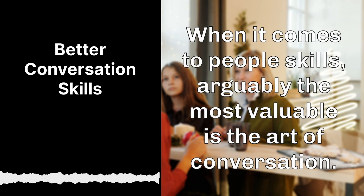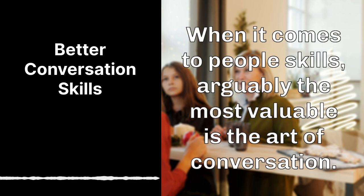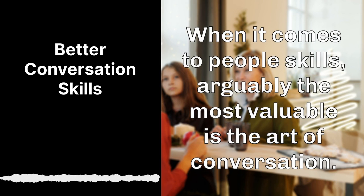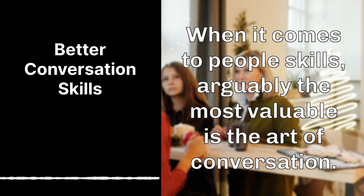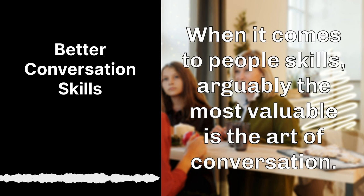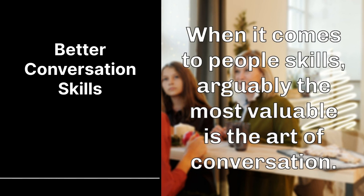George A. Miller was a Harvard psychologist who fleshed out this theory in the 1950s. His big insight was into the way the human brain processes information. There are natural limits that we need to work around. Too much detail is a problem, but so is too little. We can work around these limits, however, with chunking.